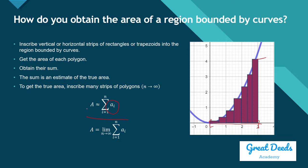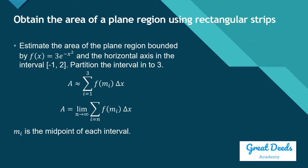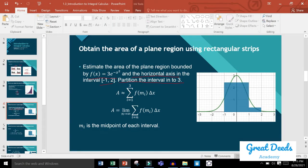This is a numerical approach to getting the area of a region. Of course, you cannot implement a code where n approaches infinity — your computer program must end somewhere, so n cannot really go to infinity. Now I'm going to illustrate again the idea behind integration as the area of a plane region. Estimate the area of the region bounded by f of x equals 3 times e to the negative x squared, bounded below by the horizontal axis on the interval negative 1 to 2. Partition the interval into 3.